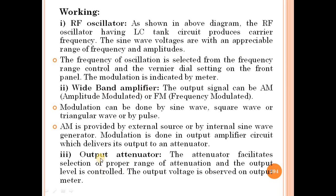The third block is the Output Attenuator. The attenuator facilitates selection of the proper range of attenuation. The output level is controlled and the output voltage is observed on the output meter.